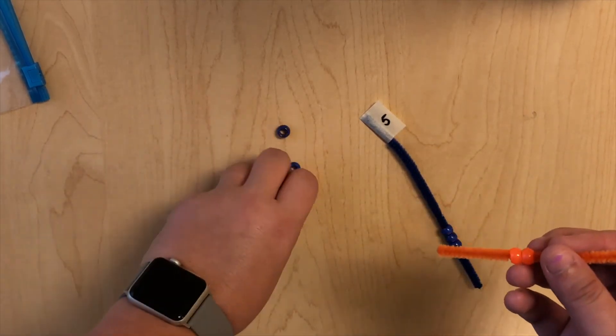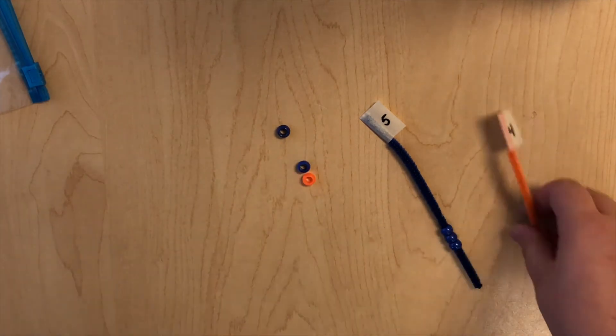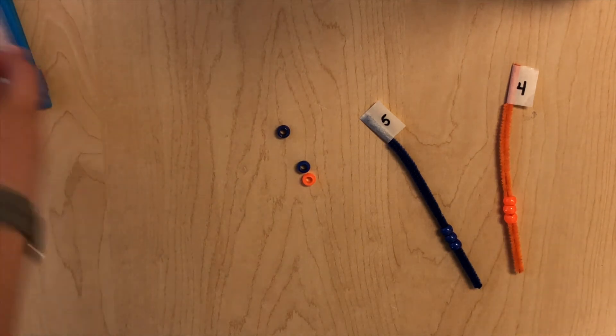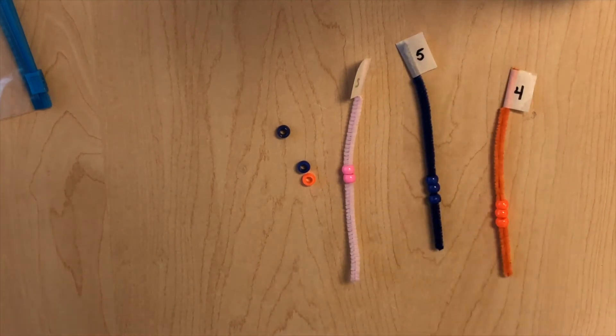Now you guys can choose whatever three colors you want. If that's too easy, pick out more colors and just sort these colors and name them by their names. So I did pink, blue, and orange. Send me a video on Facebook or pictures of what colors you chose and let me know how this went. You guys have fun, bye!